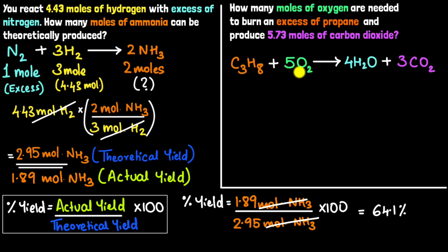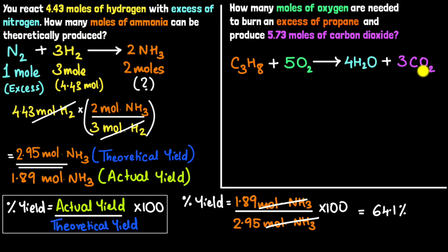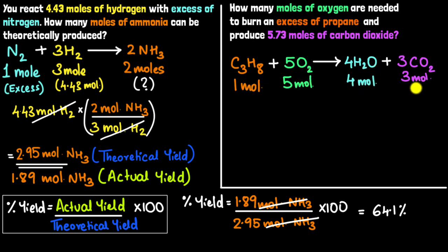Let's move on to the next problem. We are reacting propane with oxygen to give water and carbon dioxide. The question is: how many moles of oxygen are needed to burn an excess of propane and produce 5.73 moles of carbon dioxide? Our first step is to check whether the equation is balanced — and it is. For example, there are 10 atoms of oxygen on the right-hand side and 10 on the left. The balanced equation tells us: 1 mole of propane reacts with 5 moles of oxygen, giving 4 moles of water and 3 moles of carbon dioxide.